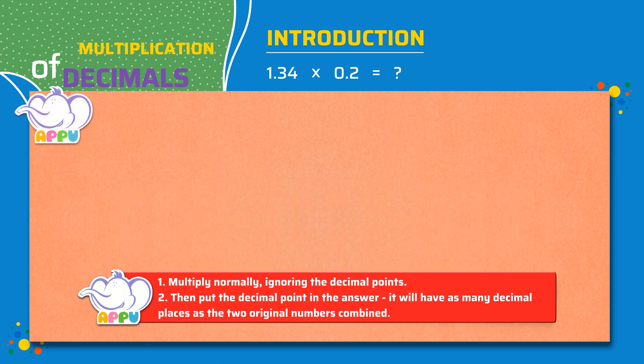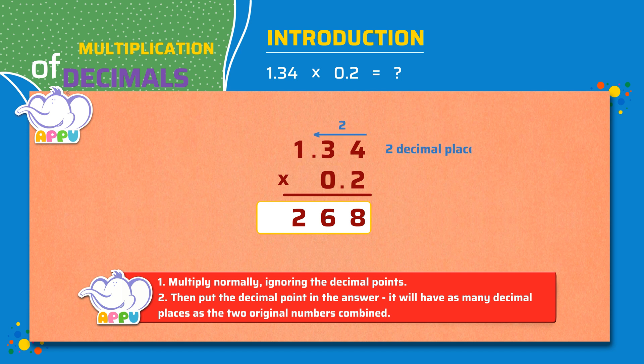We multiply the numbers, 134 times 2. 2 times 4 is 8. 2 times 3 is 6. 2 times 1 is 2. Then count the digits after the decimal point for each of the numbers. Here it is 2 plus 1 equals 3 decimal places. We place the decimal point after 3 digits counting from the right. The answer is 0.268. So, 1.34 times 0.2 equals 0.268.